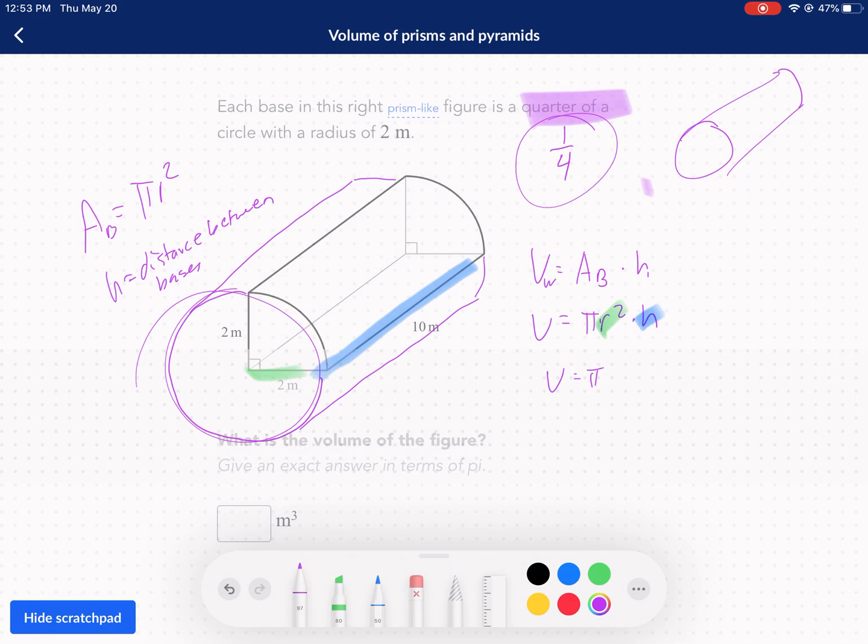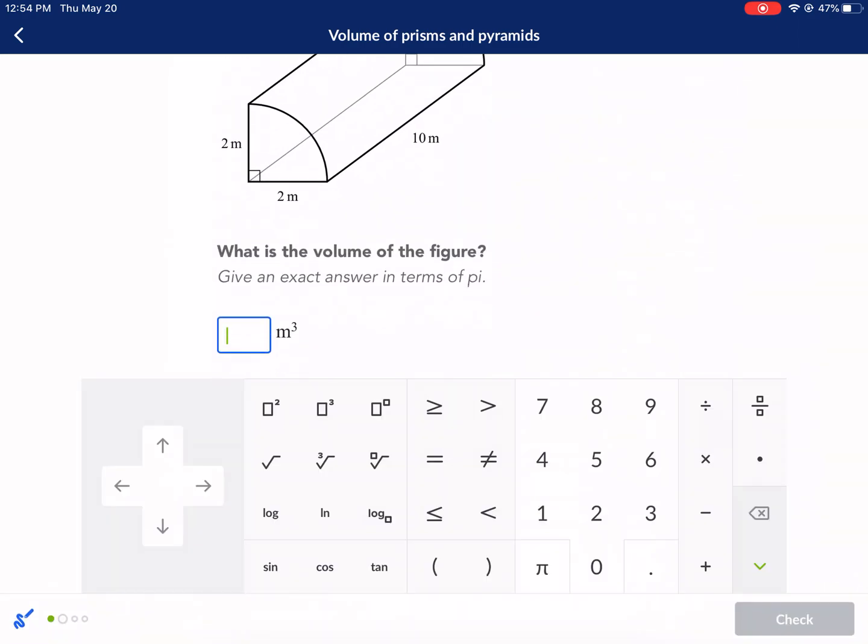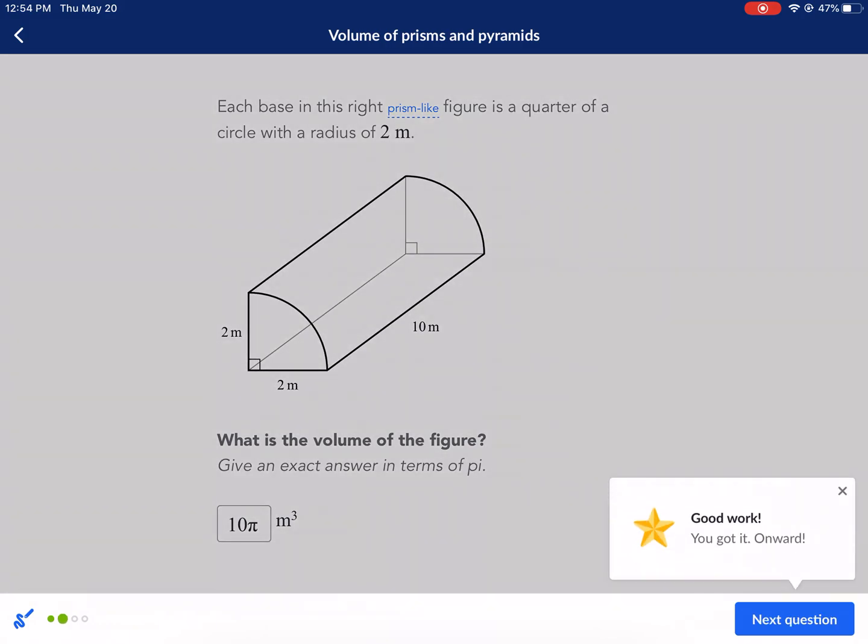Volume equals pi times, leave in terms of pi. We're going to have 2 squared, and then we're going to multiply that guy times 10. 2 squared is 4 and then multiply that by 10 and multiply that by pi, so we're going to get 40 pi for the volume of the whole thing, but we only want one fourth of that. We have this quarter little thing, so we're going to multiply by one fourth and we have 10 pi there. This is not the same as surface area. Luckily it's just volume, which is all that dense stuff inside. So we're just looking at 10 pi meters cubed here. Check it. Next question.